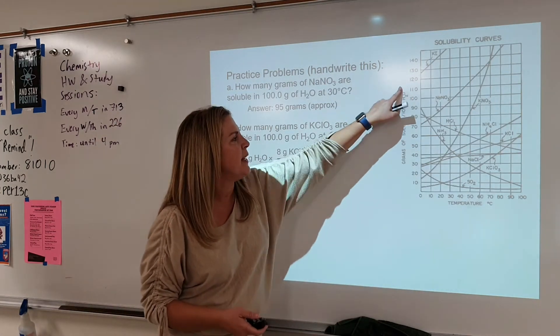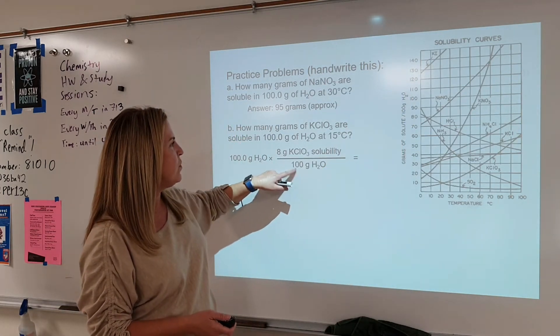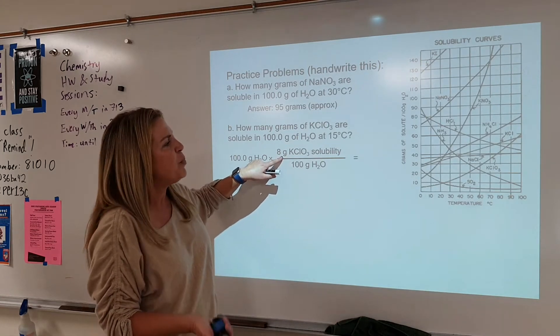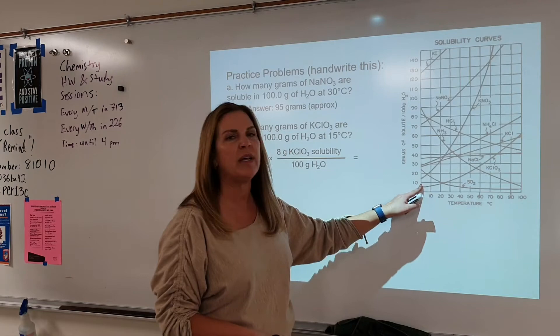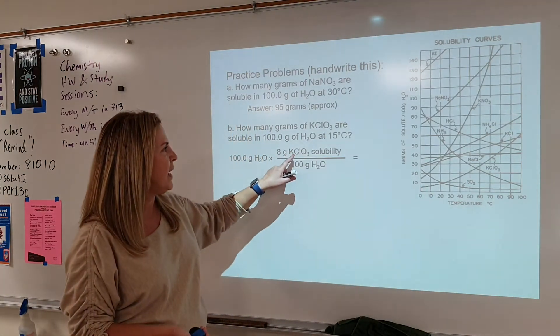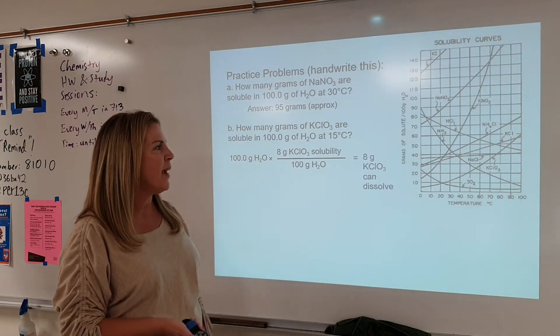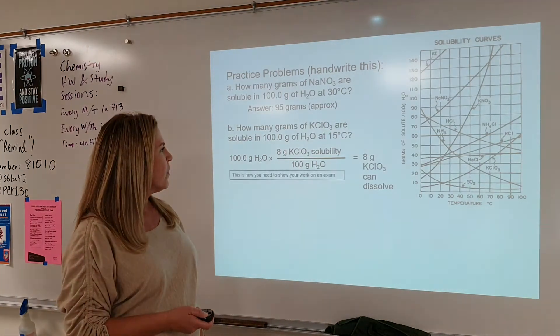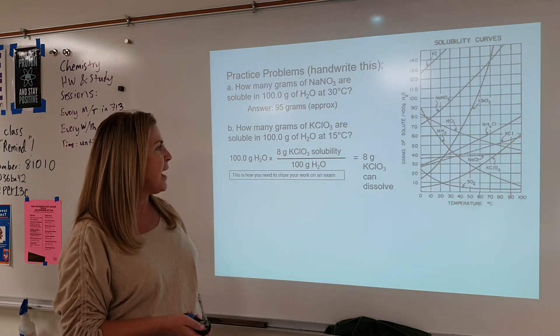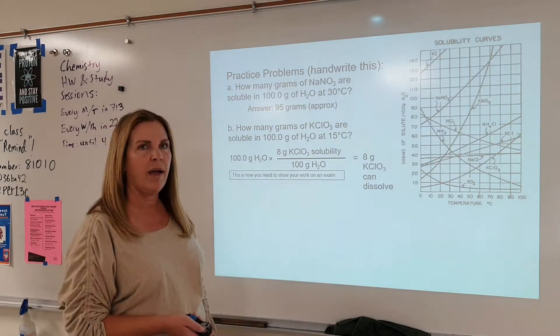So doing that, again, the 100 grams is right here. For every 100 grams of water, we would say approximately, right, we're at 15, approximately 8 grams of KClO3. And so our answer is 8 grams can dissolve. All right. Again, this is how you need to show your work on the exam.